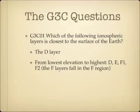Which of the following ionospheric layers is closest to the surface of the Earth? The layer closest to the surface is the D layer. From lowest to highest elevation, it goes D, E, and then the F region, which is F1 and F2. So for this question, the layer closest to the Earth is the D layer.